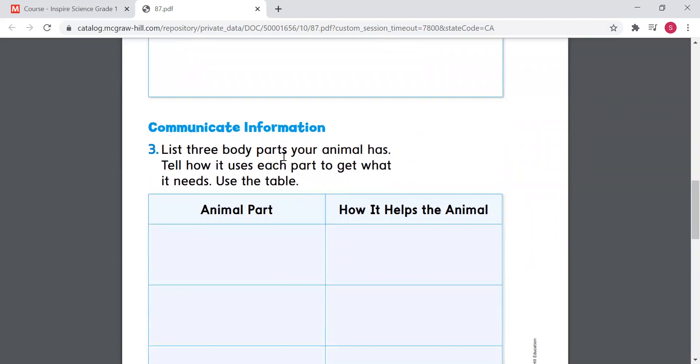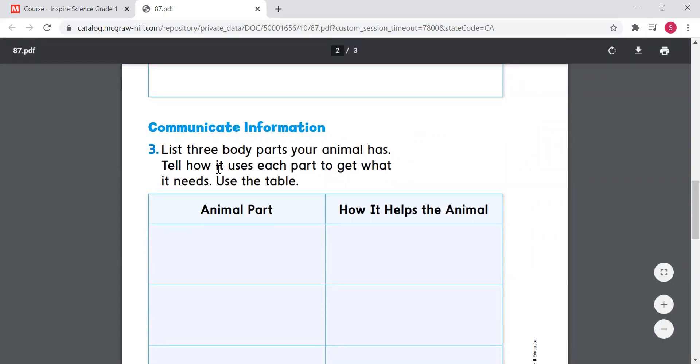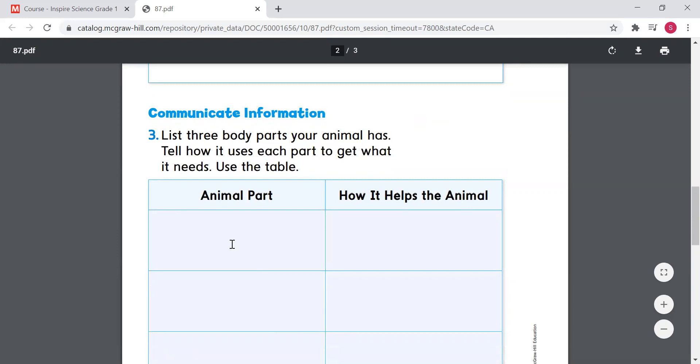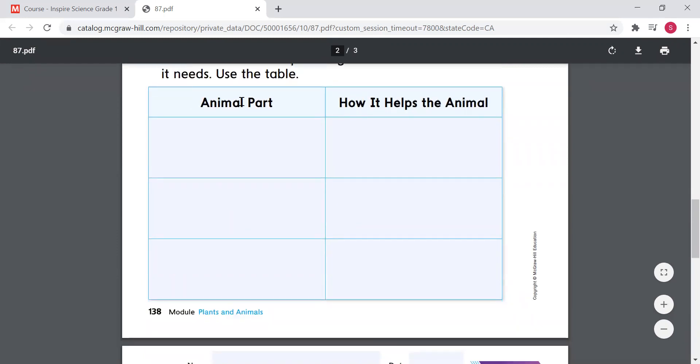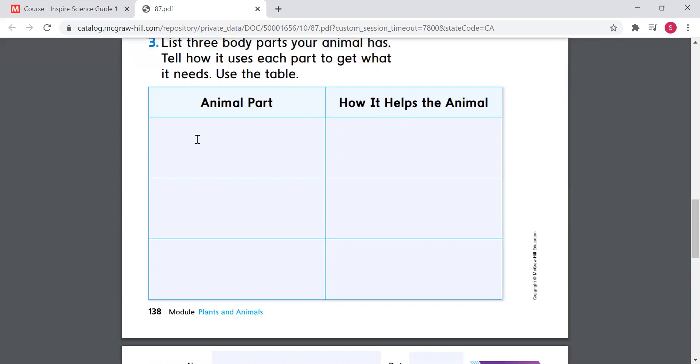All right. Number three. List three body parts your animal has. Tell how it uses each part to get what it needs. And use the table. So they made the table for you. First column here says animal part, and here how it helps the animal to survive or to live their life. So if I'm gonna talk about my dolphin, I will say, for example, fins. Fins help the dolphin to swim and to find their food. So I will be writing here in this part, I will be writing fins. And then I will come here and I will say these fins help the dolphin to swim and to find food.